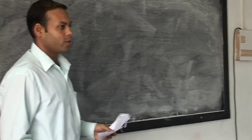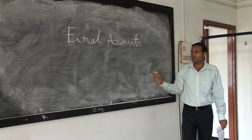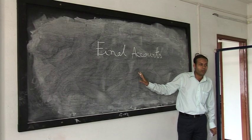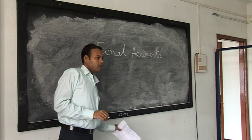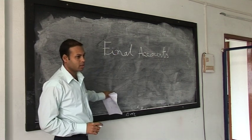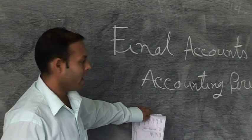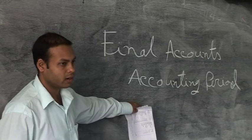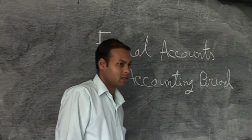Hello learners. Today we will discuss final accounts. Final accounts are prepared at the end of an accounting period. Accounting period means the year for which we maintain our business records — that is, we record the business transactions during a particular period of time. Generally the accounting period is commensurate with the financial year for tax purposes, which starts from 1st April and ends on 31st March of the next year.